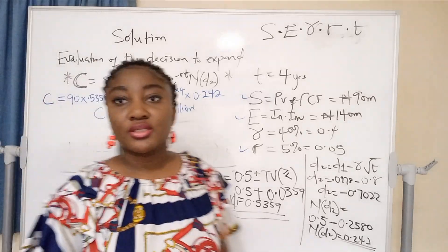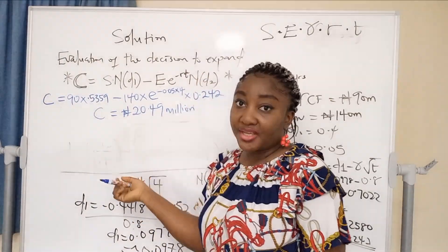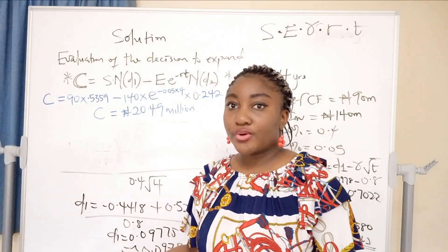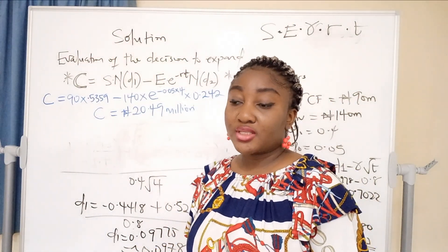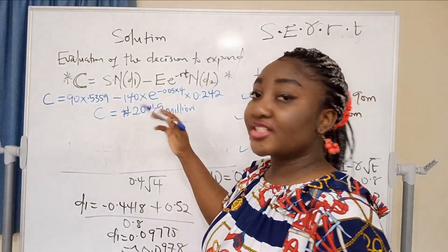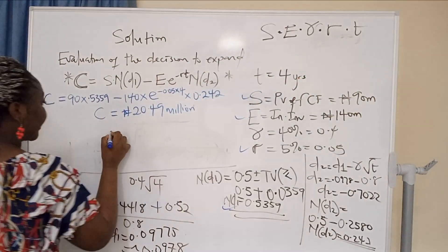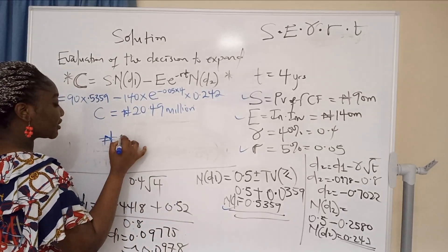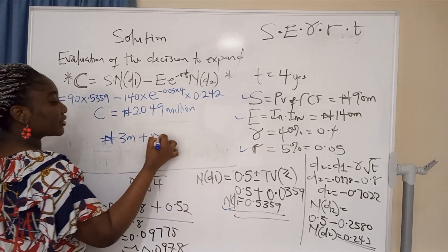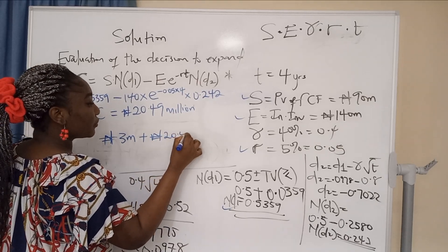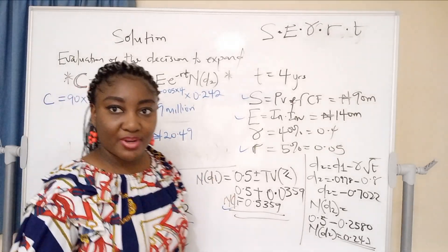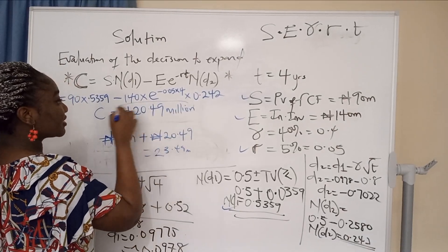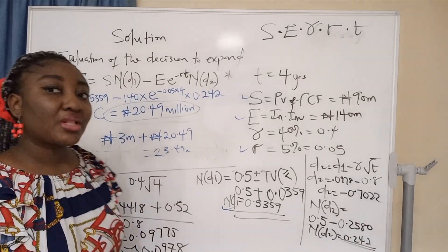So it's positive. As long as it's not a negative, it means that the option is viable. There's a positive outcome if they make the decision to expand. In addition to that 3 million NPV that they have - they didn't ask for that, but if they say what's going to be the worth of the whole business - they already have a positive NPV of 3 million plus another positive NPV of 20.49 million if they expand in four years. That will give us 23.49 million. But this is the answer to this evaluation: 20.49 million.